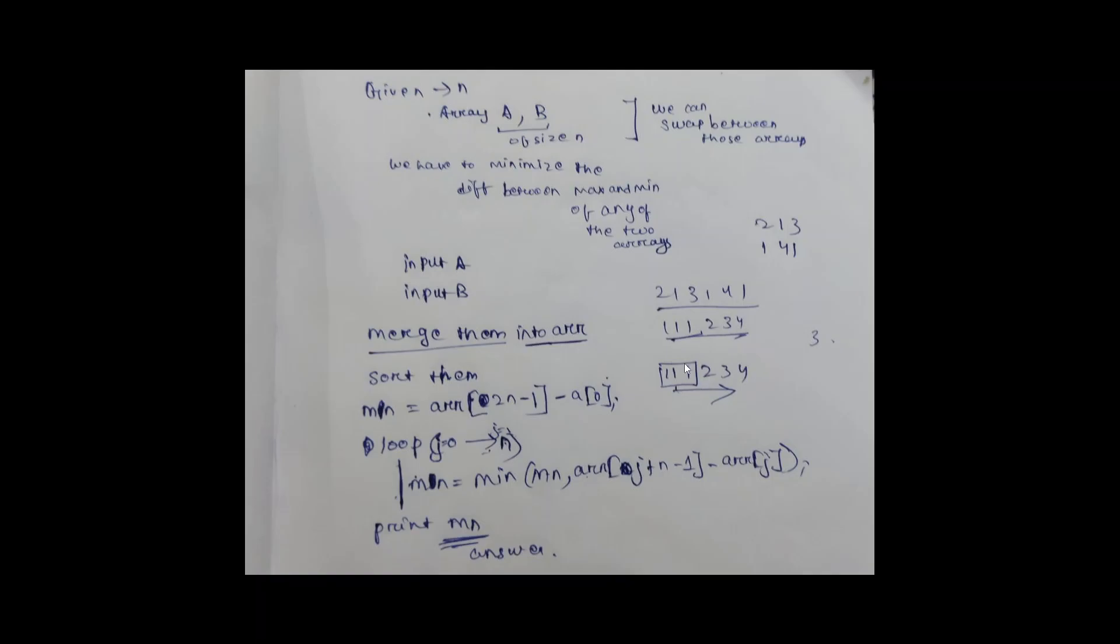With window size 3, we use a sliding window approach: first 1,1,1, then 1,1,2, and so on. Eventually we get our minimum value in the variable MN, which we print as our answer.